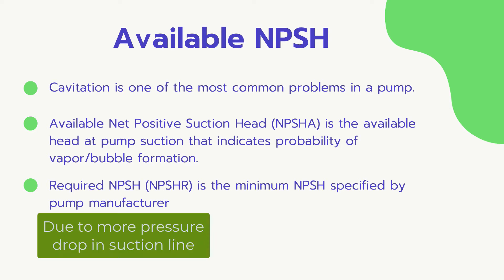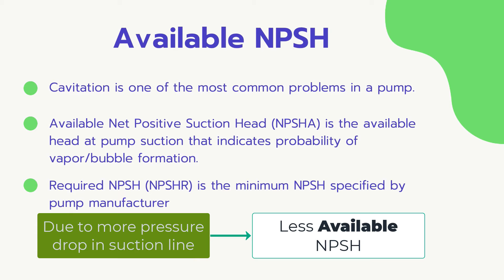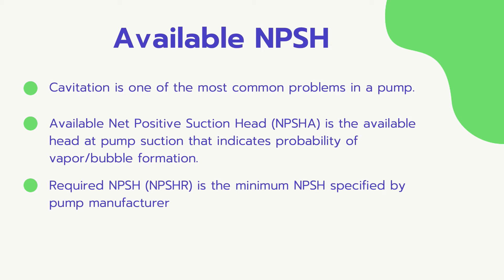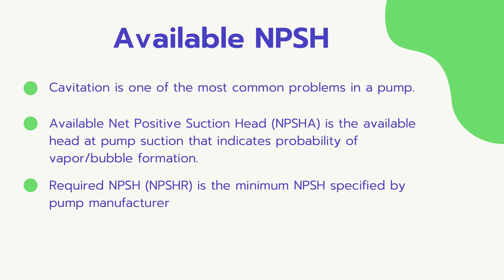In addition, due to increased losses in the system, the available NPSH would be reduced as flow rate increases. So as the flow rate increases, the probability of cavitation increases. This means that the NPSH available should always be greater than the required NPSH, and this should even be by a margin.